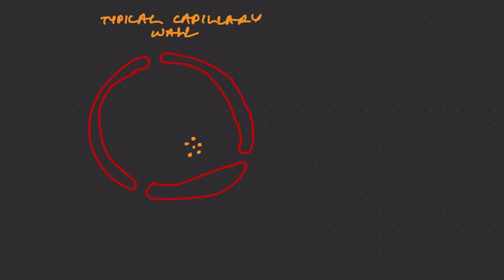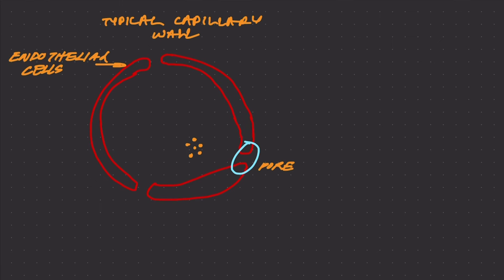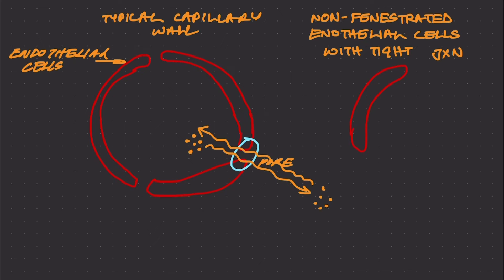Now let's look at a typical capillary wall of a typical blood vessel that is not in the brain. These would be the endothelial cells, and in between the endothelial cells, there are pores. These pores would allow hydrophilic molecules to cross easily through this space.